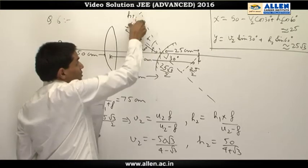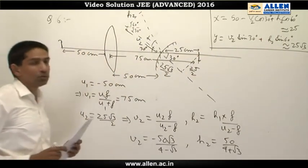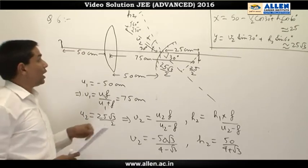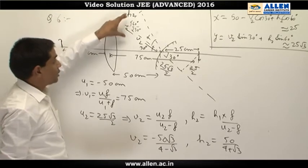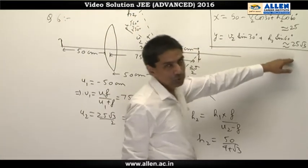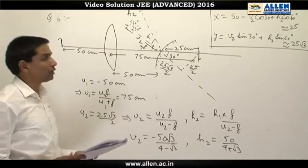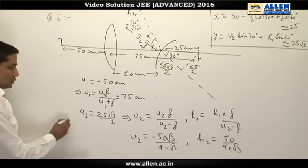50 minus v₂ cos 30 degrees plus h₂ cos 60 degrees. We calculate, it comes out to be approximately 25 centimeter. The y coordinate comes out to be v₂ sin 30 degrees plus h₂ sin 60 degrees, which is close to 25√3 centimeter. Going by the spirit of IIT JEE, the answer will be other, although the answer is only approximate.